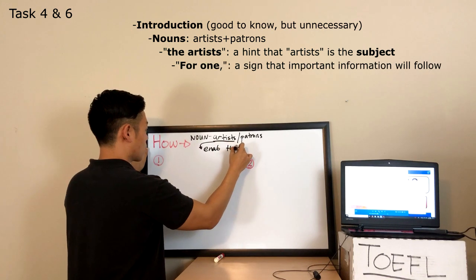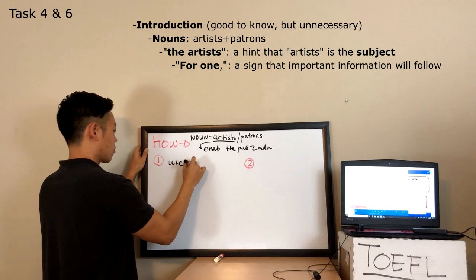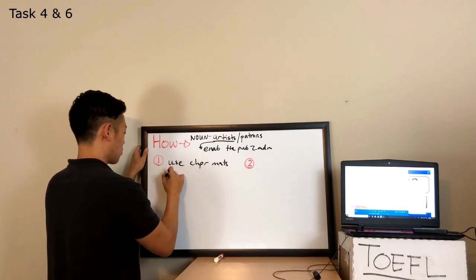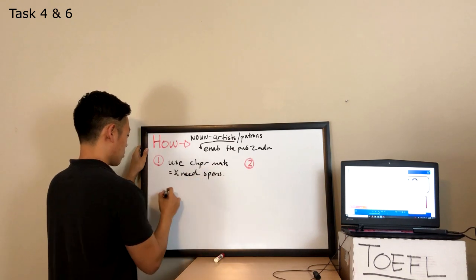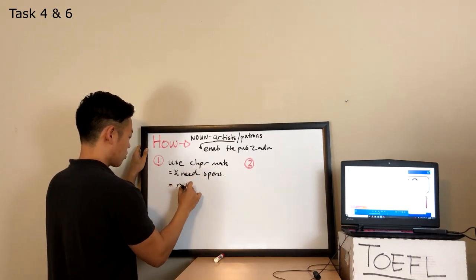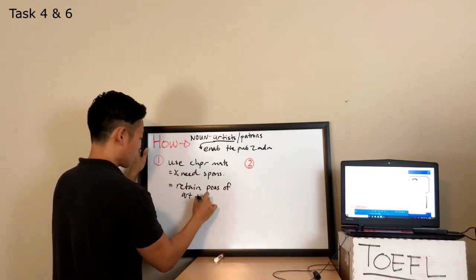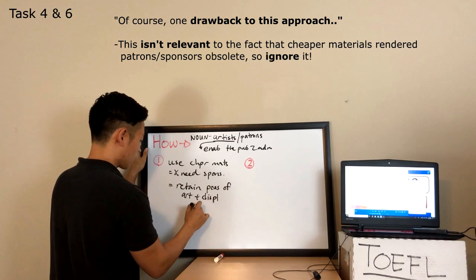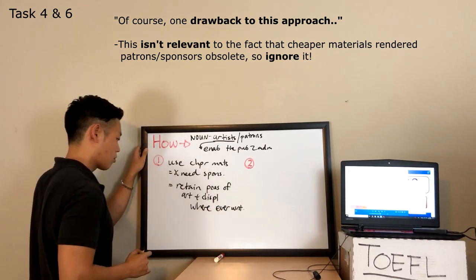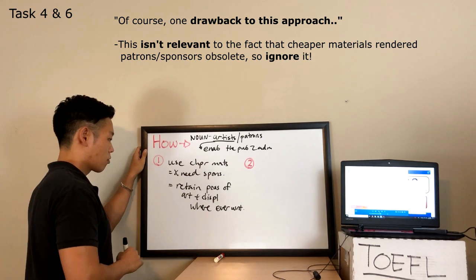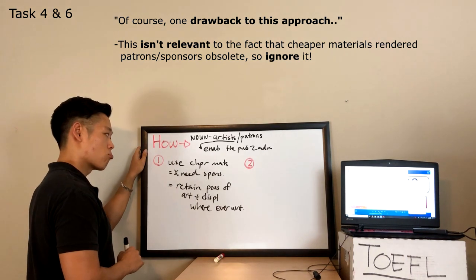For one, many artists began using cheaper materials. This let them work without a sponsor. This way, they could produce the art they wanted to and also retain possession of their art. They were then free to display it wherever they wanted to. This naturally permitted many more people to see their work. Of course, one drawback to this approach was that the lower quality of the paint and other materials meant their work often faded quickly. Fortunately, many of these works can now be restored using modern methods.